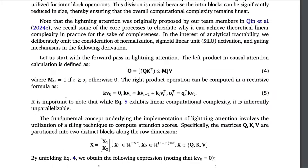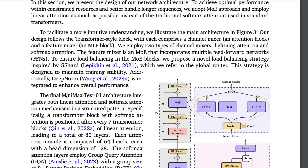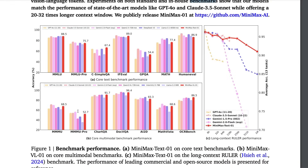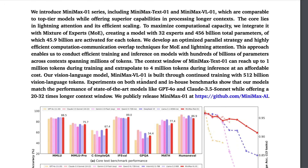With the new architecture, the model is also quite competitive with all existing models. The strong red line representing MiniMax Text-01 shows some quite impressive benchmark results. This model is better than Claude 3.5 Sonnet on MMLU, almost equivalent to Claude 3.5 Sonnet on IFEval, competitive on GPQA and math, and on par on coding. This is not an experimental model — it has been open-sourced for production.